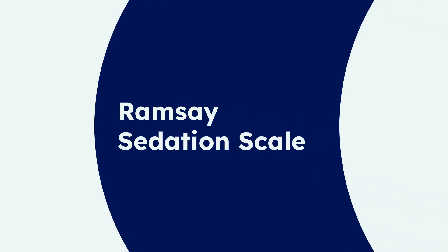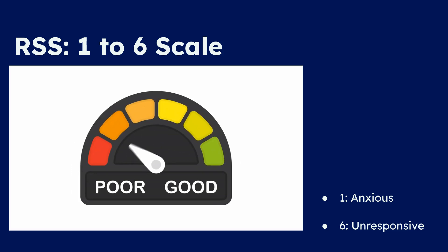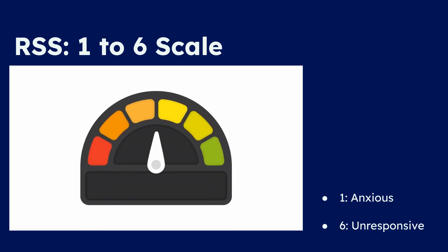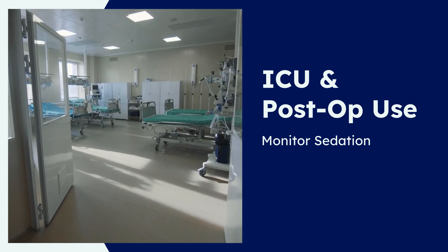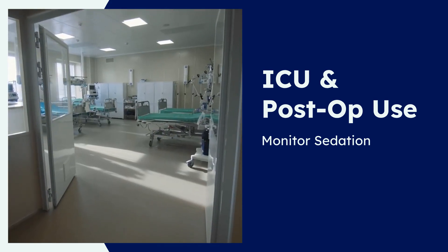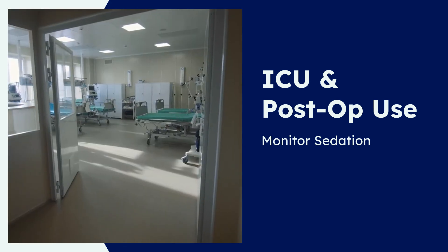First up is the Ramsay Sedation Scale, or RSS. This is one of the earliest tools developed to assess a patient's level of consciousness during sedation. The RSS ranges from 1 to 6: a score of 1 indicates an anxious patient, while a 6 means no response to stimuli. It's a quick, observable assessment, primarily used in ICU and postoperative settings to monitor and titrate sedative medications. An RSS score of 2 to 4 is usually considered adequate for moderate sedation.